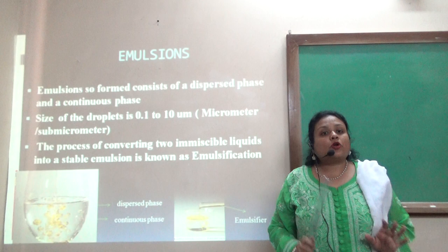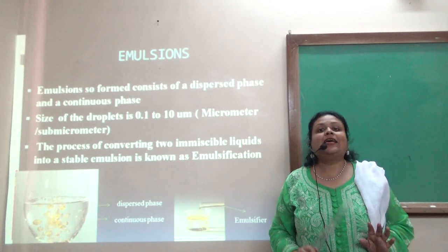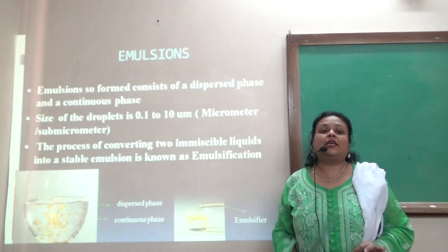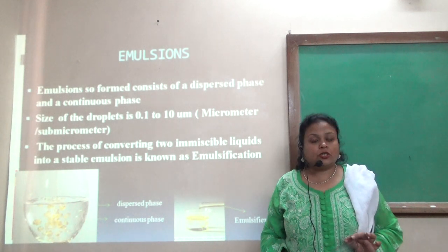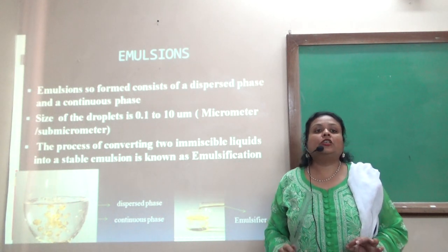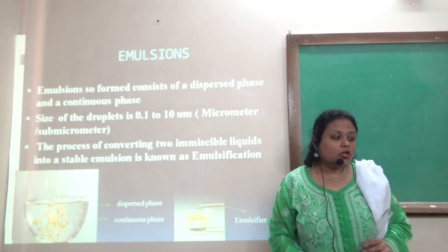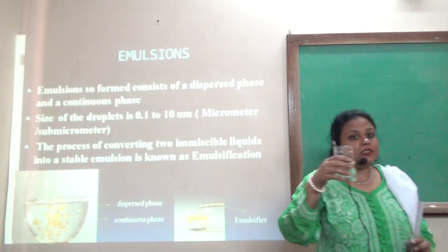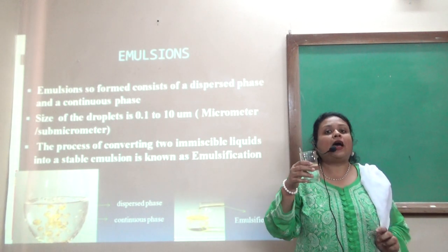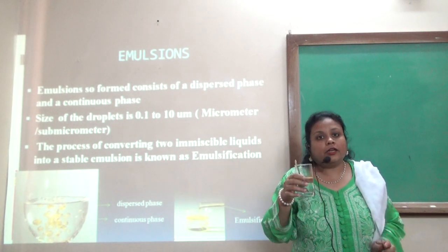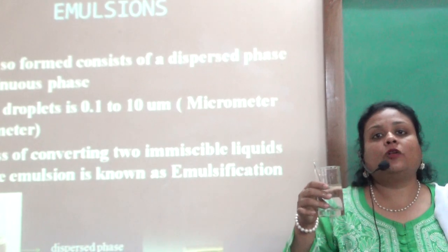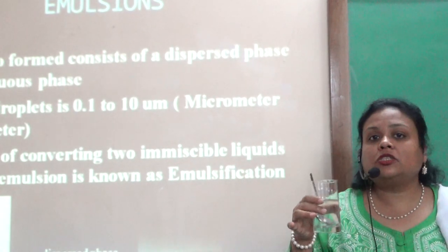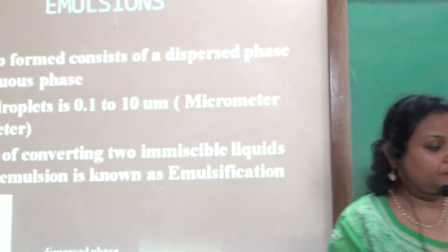The process of converting immiscible liquids to a stable emulsion is known as emulsification. To bring this to a stable emulsion, you need to add a third ingredient. That third ingredient is known as an emulsifier, and the process is known as emulsification.